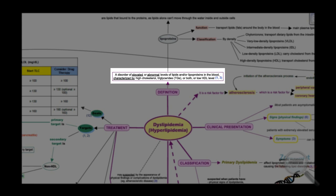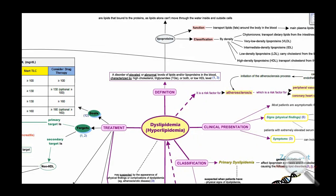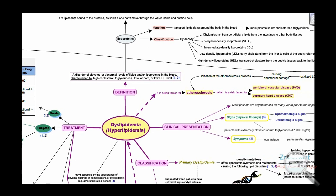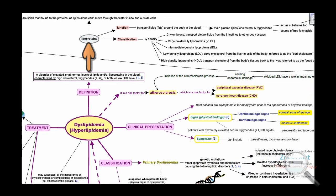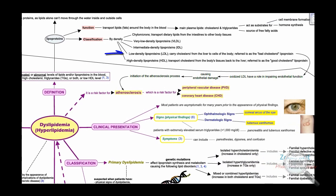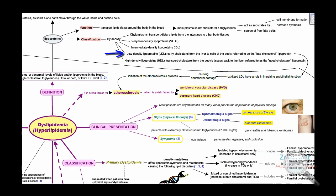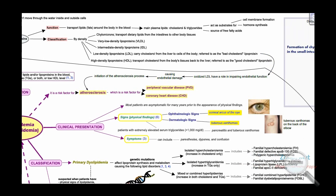From this definition branches out the normal physiology of lipid metabolism, including what is meant by lipoproteins, their function, and classification. Low-density lipoproteins carry cholesterol from the liver to cells of the body and are referred to as bad cholesterol. LDL has a role in initiating the atherosclerosis process — this is how dyslipidemia is a risk factor for atherosclerosis and consequently cardiovascular diseases.